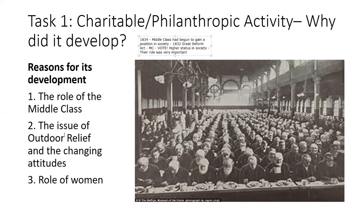We also need to look at the issue of outdoor relief and changing attitudes. Outdoor relief was something the government really wanted to get rid of, but every time they tried, they faced a barrage of opposition, mainly because it was a cheap alternative to workhouses that the parishes preferred. And then there's the role of women — very minimal in this period of 1785 to 1870 — but this opportunity to help paupers really put women's rights on the map, and some argue it was the beginning of a subtle suffragette movement.